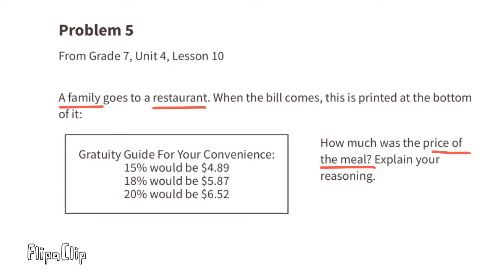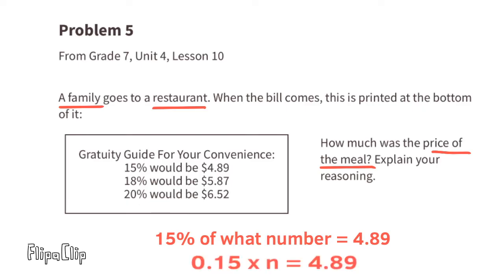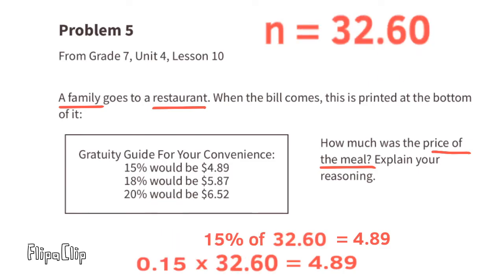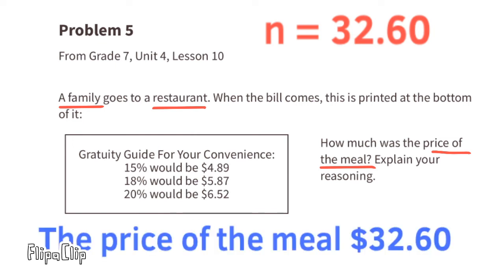To find the price of the meal, we can ask: 15% of what number equals $4.89? We rewrite this as 0.15 times n equals 4.89, then solve for n by dividing both sides by 0.15. N equals 32.60, meaning the price of the meal was $32.60.